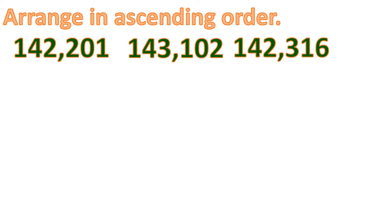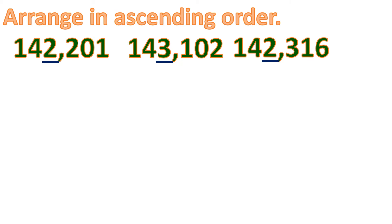So we will find the smallest number first. Let us look at the biggest place value, the 100,000th place — these are all the same, so we cannot use it to compare. Moving to the 10,000th place, they all have 4 as well, so we still cannot compare. Moving to the 1,000th place, we have two 2s and a 3, so the smallest numbers are either the first or the third number. Comparing those two at the 100s place, they have 2 and 3, so the smaller number is 142,201.